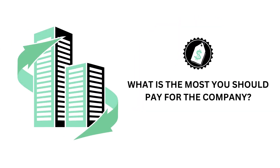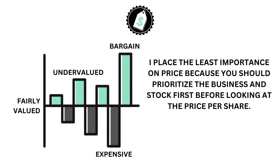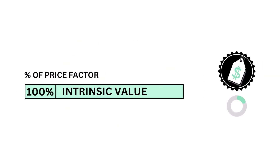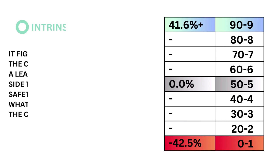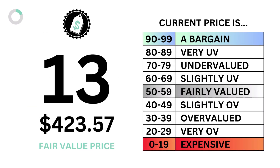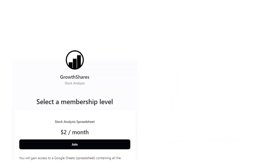Let's then look at the price. The price factor accounts for 20% of the analysis. The price asks the question: what is the most you should pay for the company? I place the least importance on price because you should prioritize the business and stock before looking at the price per share. The price will tell us when to invest, but not why you should invest. The price factor only consists of one metric: the intrinsic value. The intrinsic value figures out the fair value price of the company using a discounted cash flow model with a leaning towards the conservative side to provide a robust margin of safety. A stock price higher than the fair value price is considered overvalued; a stock lower than that is considered undervalued. The models tell us that an intrinsic value of 0% is considered fairly valued. Here's our intrinsic value and price grade.